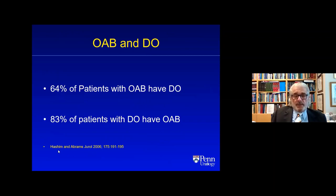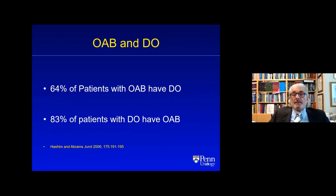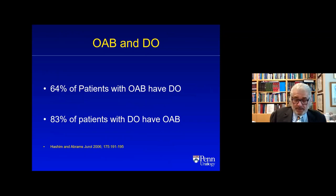This is an interesting study by Hashim Hashim and Paul Abrams: 64% of patients who had overactive bladder had detrusor overactivity, meaning 36% did not on urodynamics. And 83% of patients with detrusor overactivity on urodynamics had overactive bladder. Interesting statistics to remember.